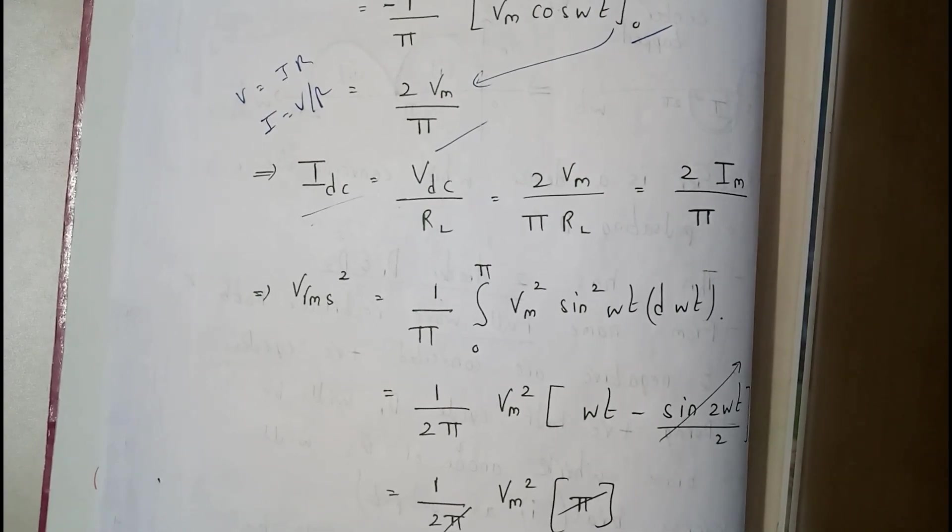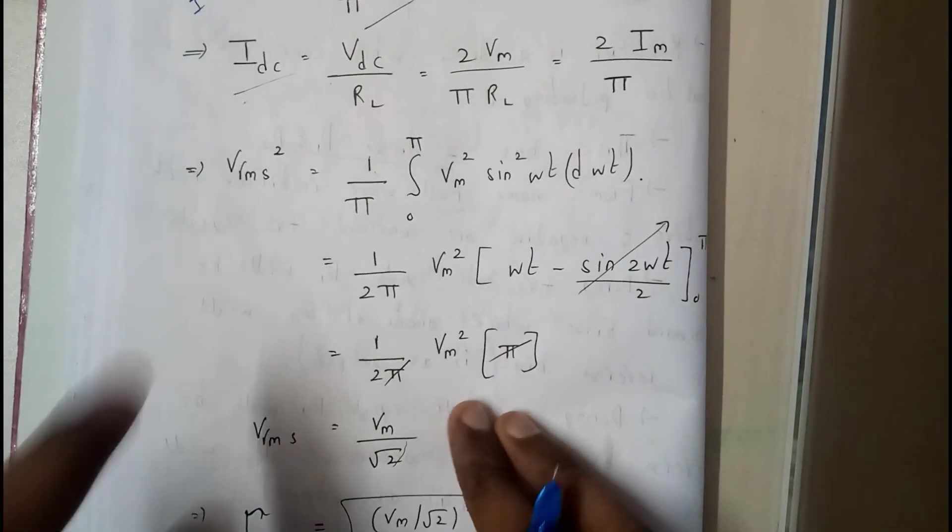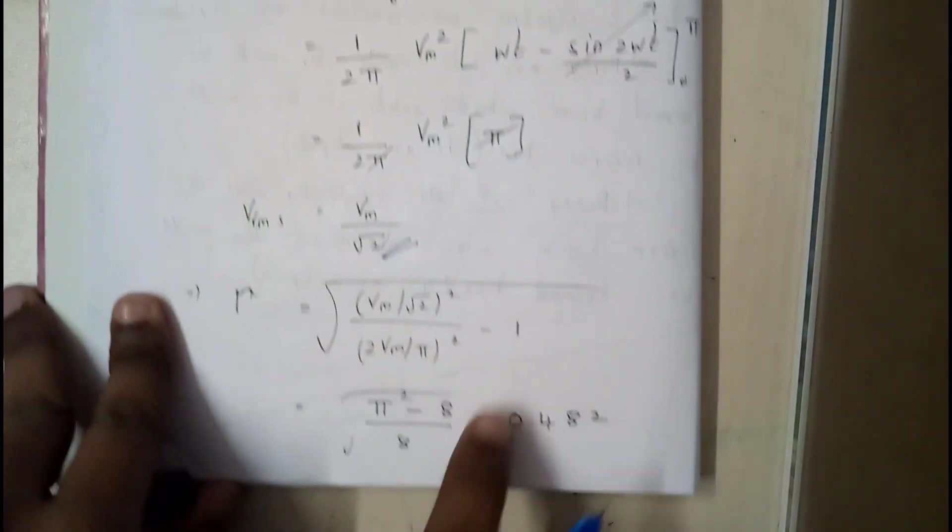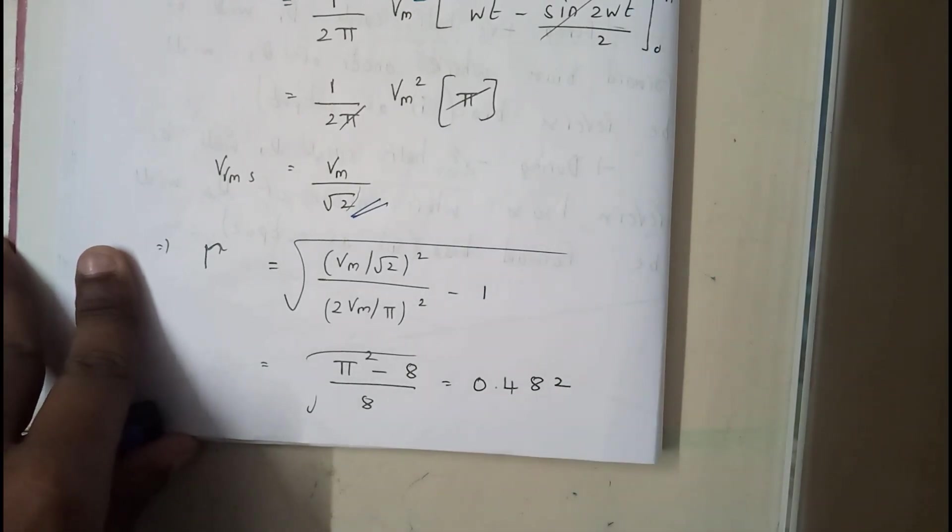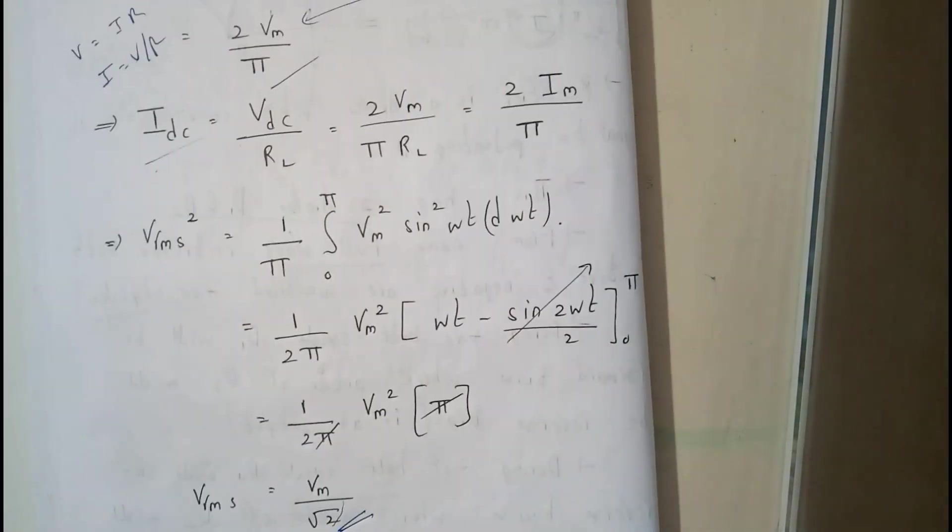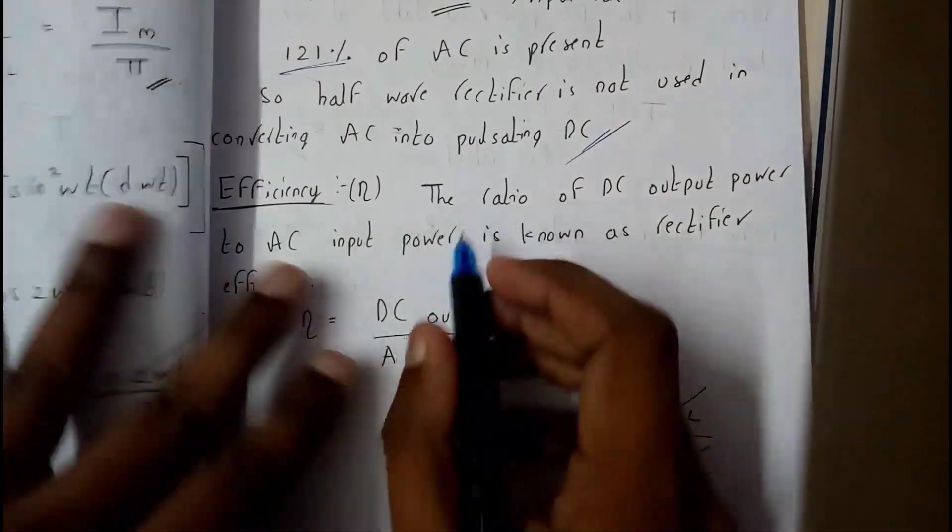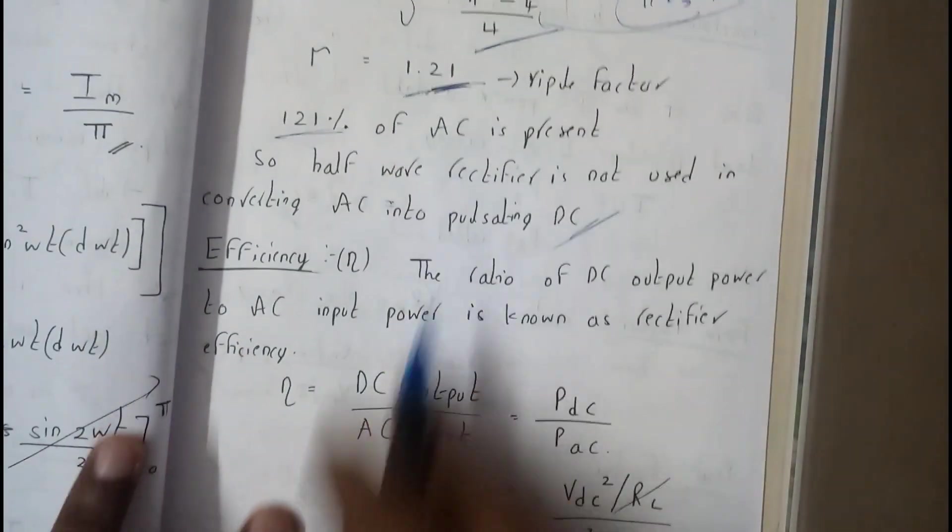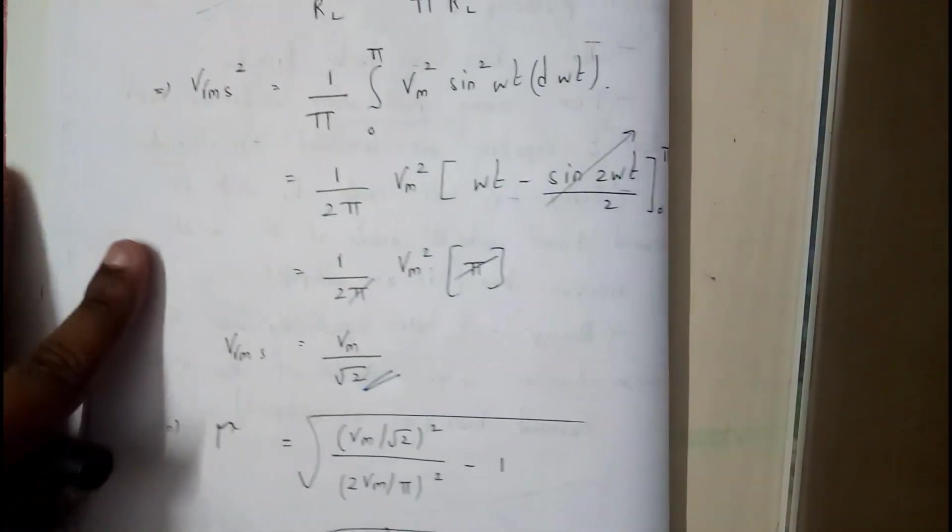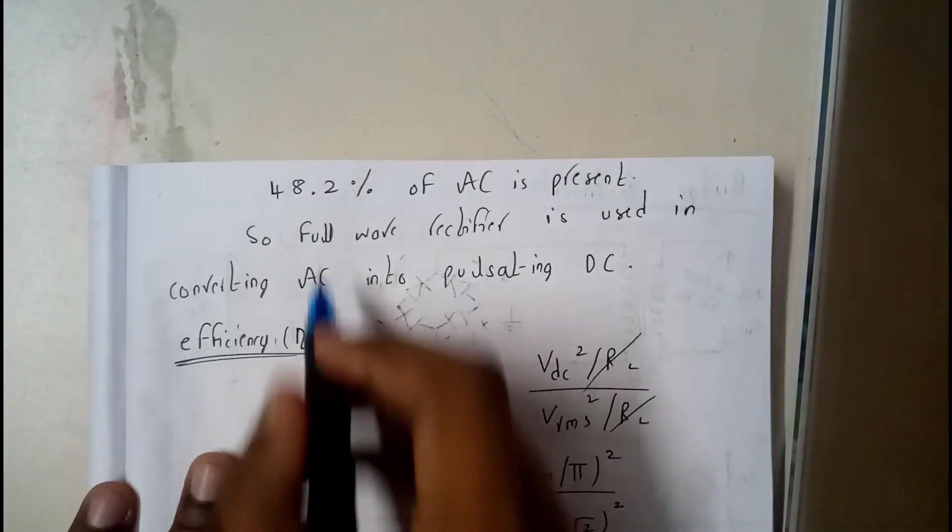So once we apply these two values in our ripple factor, we're gonna get a value 0.482. So this is the ripple factor value of a full-wave rectifier. If you observe the previous half-wave, we got 1.21. That's really a large thing. Here we got really less, 0.48. So only 48.2% of the AC supply is present.